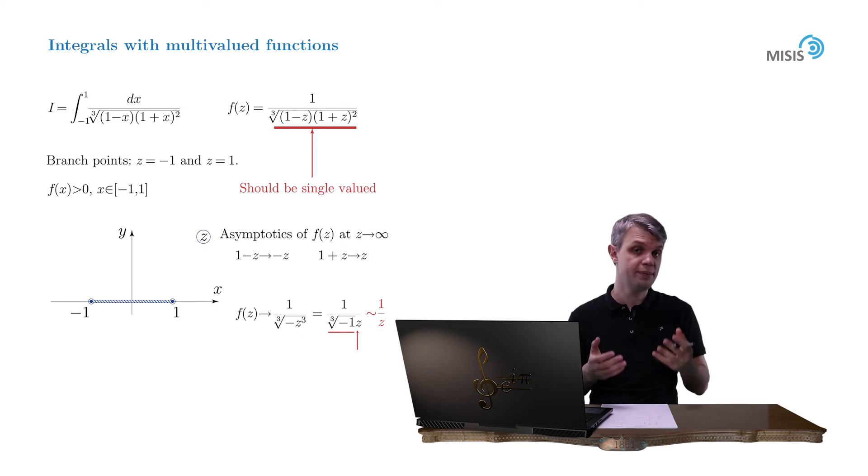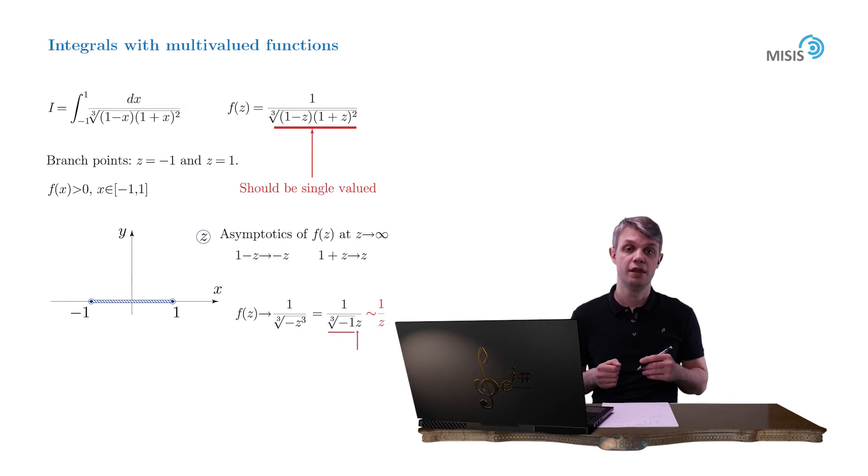And what that means is that, for example, once we rotate around the large circle around our branch cut, the function returns to its original value. That is, it stays single-valued. Therefore, such a branch cut is acceptable.